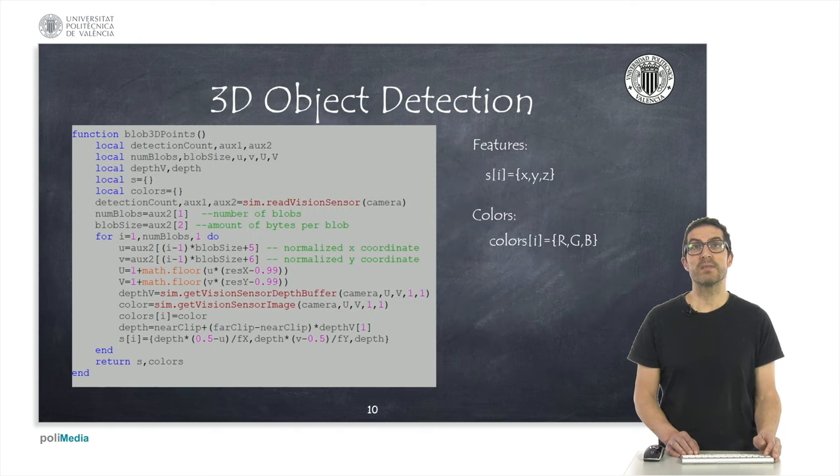Then, we can create a function for detecting 3D objects. So, the purpose of this function is to call SimReadVisionSensor function, that will return the information about the objects detected in the aux2 variable.